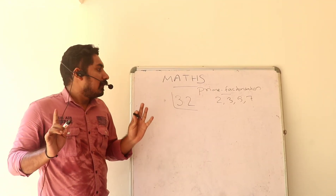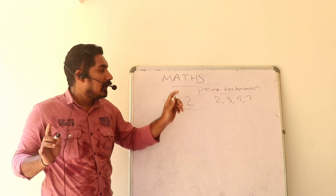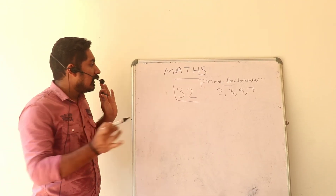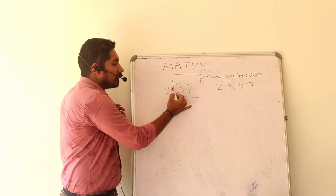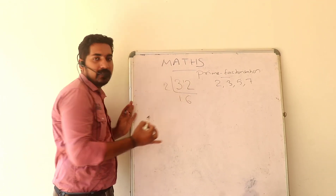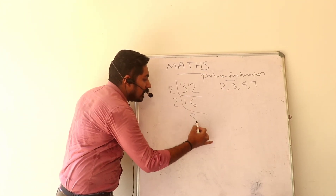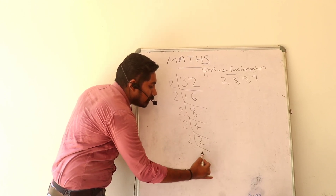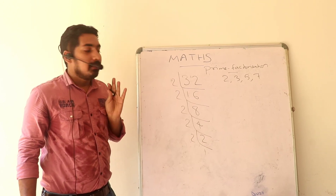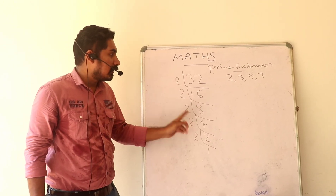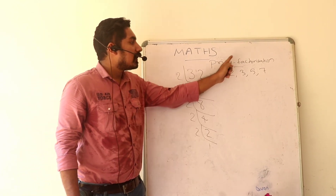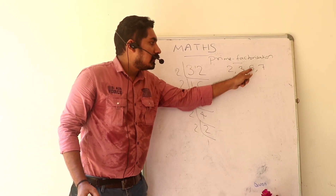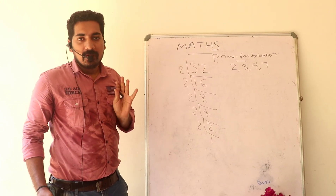We will find the number of divisors of 32 using a general method. We can do a single method — the prime factorization method. We work these together using the prime factorization method.